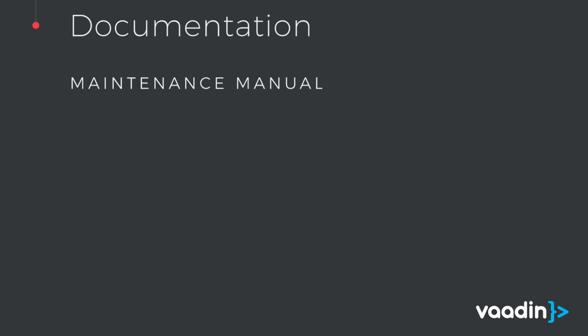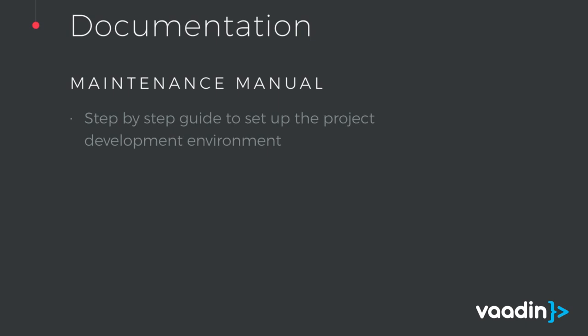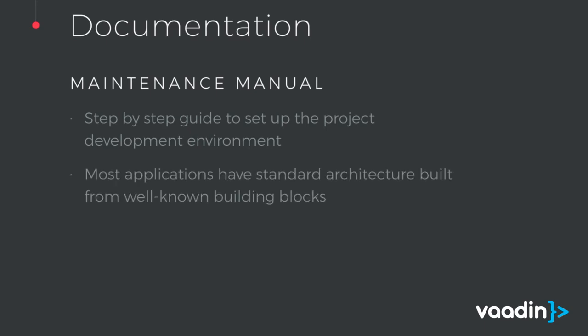So, documentation. One of these essential things that you need is a maintenance manual — a step-by-step guide to set up the system and to build it. This is very important because there are often long pauses between development, new people coming and going, and people forget. Most applications have a standard architecture, so you might not need very comprehensive documentation with all architecture descriptions. Nobody has time to read a book when all you need to do is change the color of a button. Also, if you have a huge documentation about your software architecture, it becomes costly to maintain. A mismatch between your implementation and the documentation is not going to help anyone — that's going to make things more difficult.